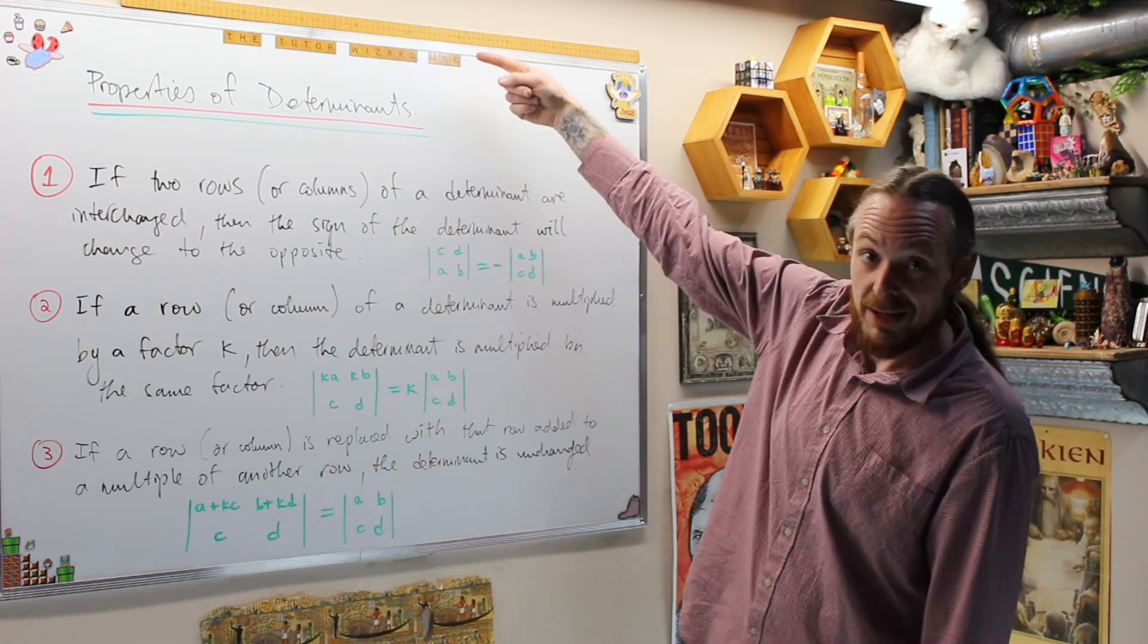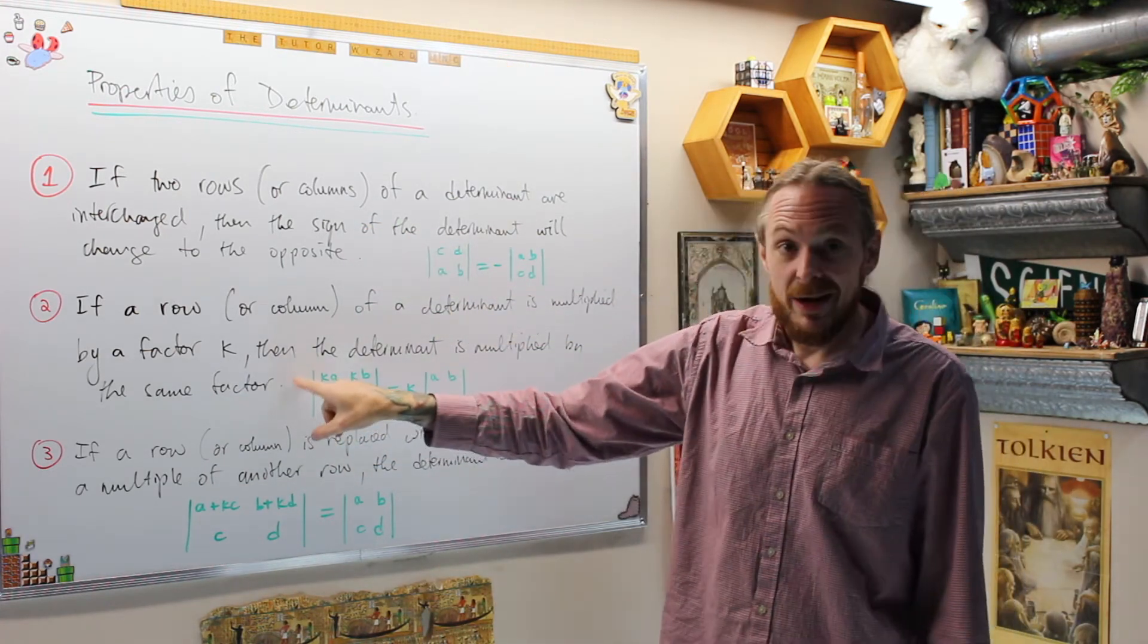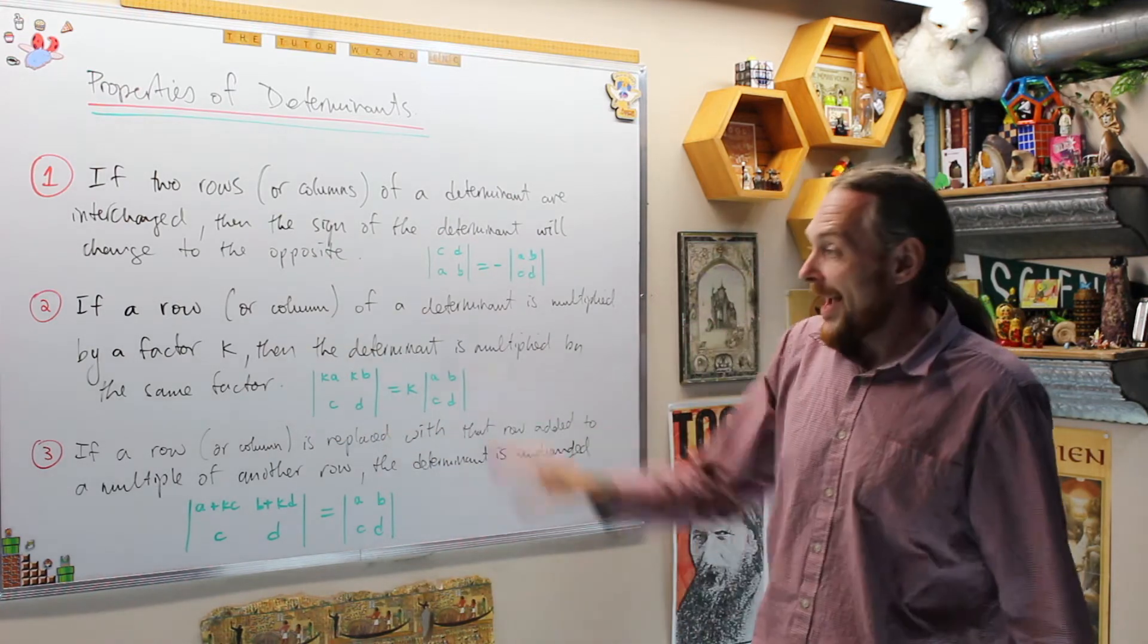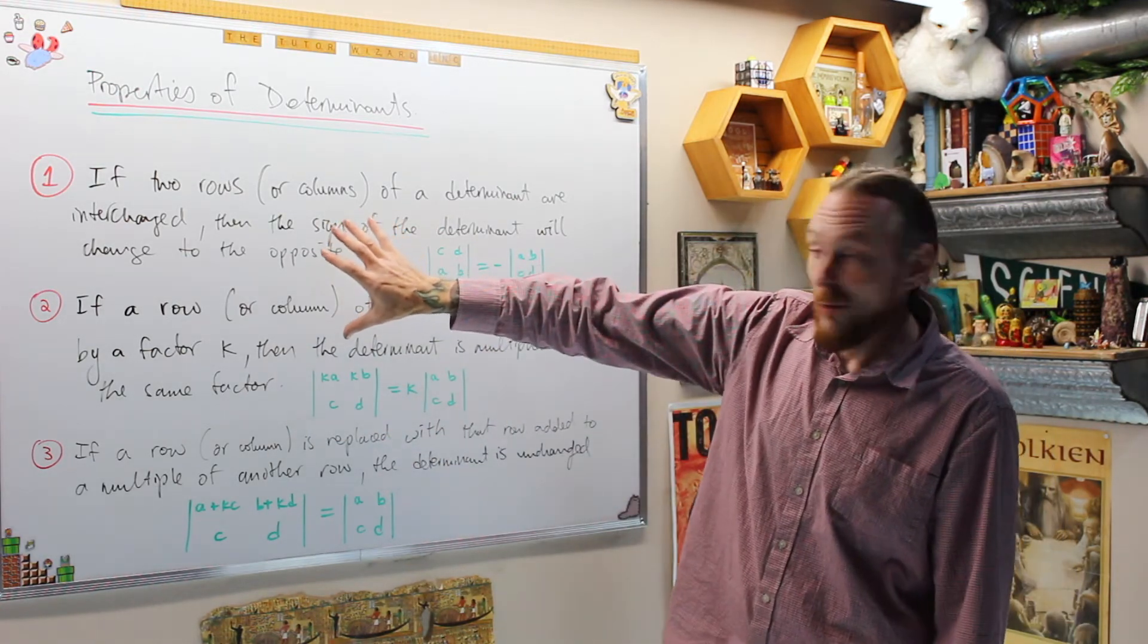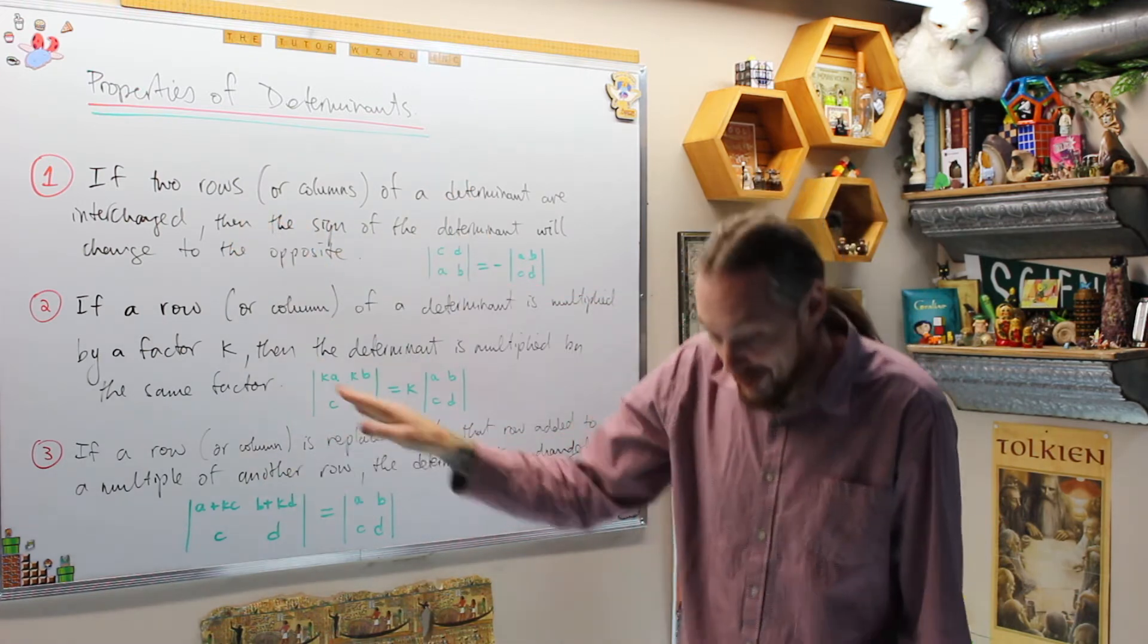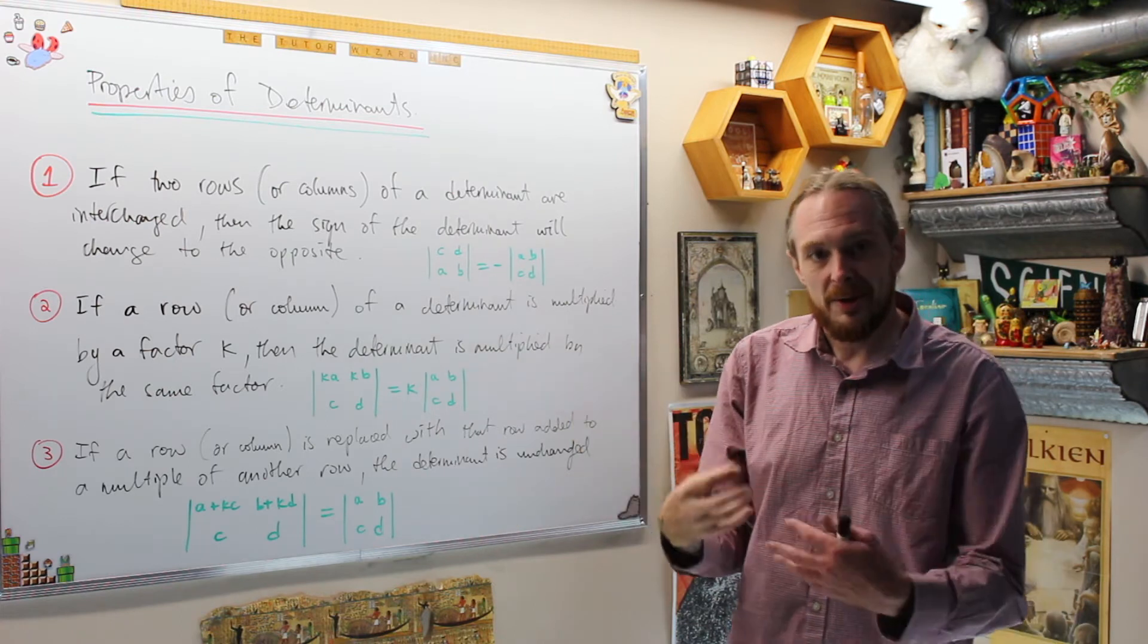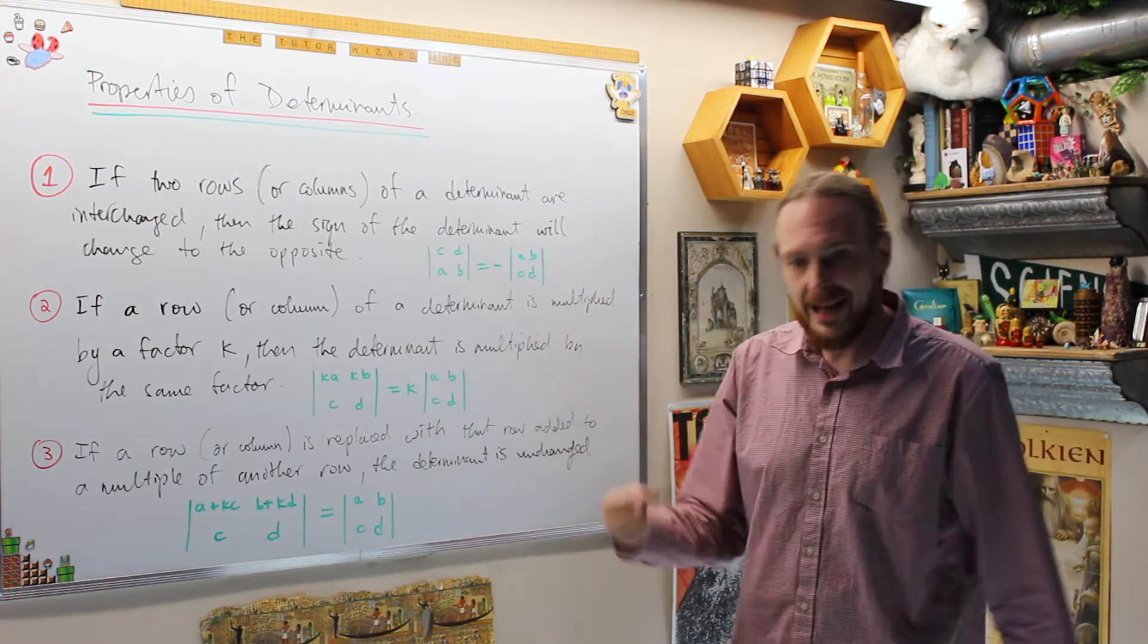Only use number one when you try to get a leading one in the top right corner. If you have to get a leading one, and that's the worst case scenario, you may have to factor something out to get a leading one. Once you do that, stop using these, get zeros below it, and then we're going to use cofactor expansion. So these are the main three. I'm going to list a few more properties which are useful, but you may not use them as often.